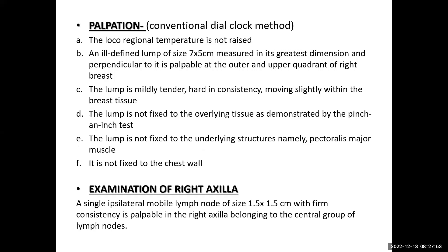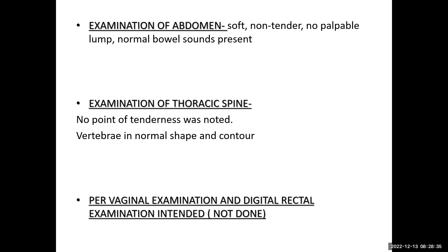On palpation using the conventional dial-clock method: local temperature not raised. An ill-defined lump of 7×5 cm in its greatest dimension is palpable in the upper outer quadrant of the right breast. The lump is mildly tender, hard in consistency, and moves slightly with the breast tissue. It is not fixed to the overlying skin as demonstrated by the pinch-and-inch test, and not fixed to the underlying pectoralis muscle or chest wall. In the right axilla, a single ipsilateral mobile lymph node of 1.5×1.5 cm with firm consistency is palpable, belonging to the central group. Abdomen is soft, non-tender, no palpable lump, normal bowel sounds. Examination of thoracic spine: no point of tenderness. Per vagina and digital rectal examination were intended but not performed.